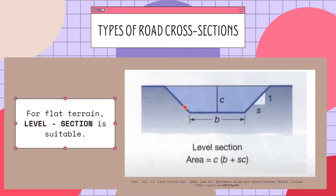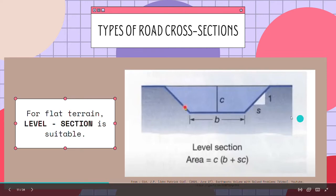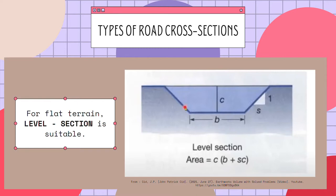There are different types of road cross sections, dependent on the type of terrain. For flat terrain, a level section is suitable. We are looking at the cross-section view of the road, not its profile. What is needed here is the area of the cross section. The level section has the same trapezoids on each side, which we can easily solve for the area.